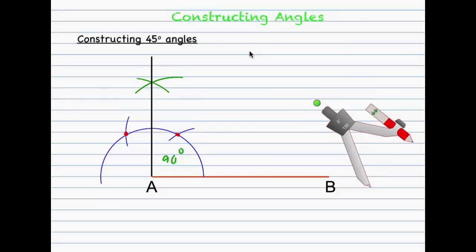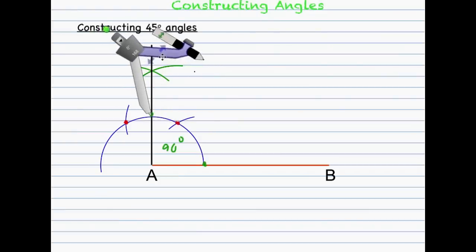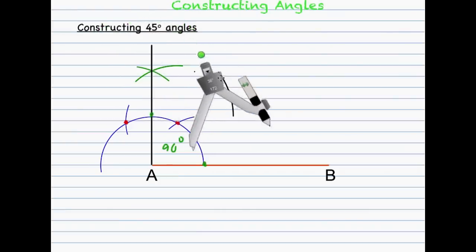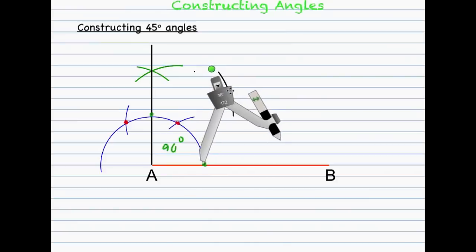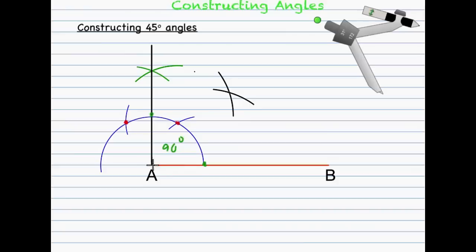All I need to do is bisect it. Put the tip of the compass to the top part of the 90 degree angle, open it and create an arc between, then move it to the next point of the 90 degree angle and create an arc which cuts that first one. Constructing a straight line through the points, I have a 45 degree angle.